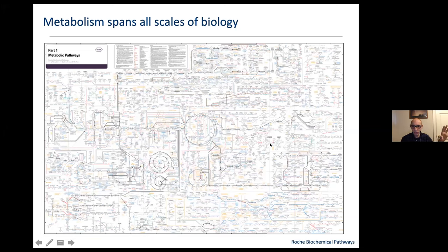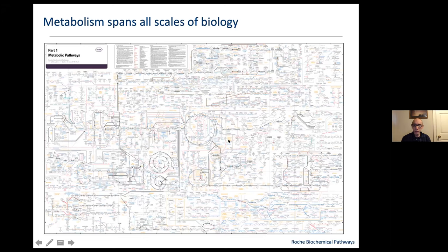Many of you have seen this chart hanging on the walls of biochemistry labs. What is beautiful about metabolism is that it really spans all scales of biology — from individual cells to metabolites happening in the biosphere. Each line in this graph is a chemical reaction, and this is a global biochemical chart — the collection of all chemical reactions happening across all living systems. These are all now available in databases. The question is: how do we understand the history of this system and how it translates into all these processes that microbes are involved in?